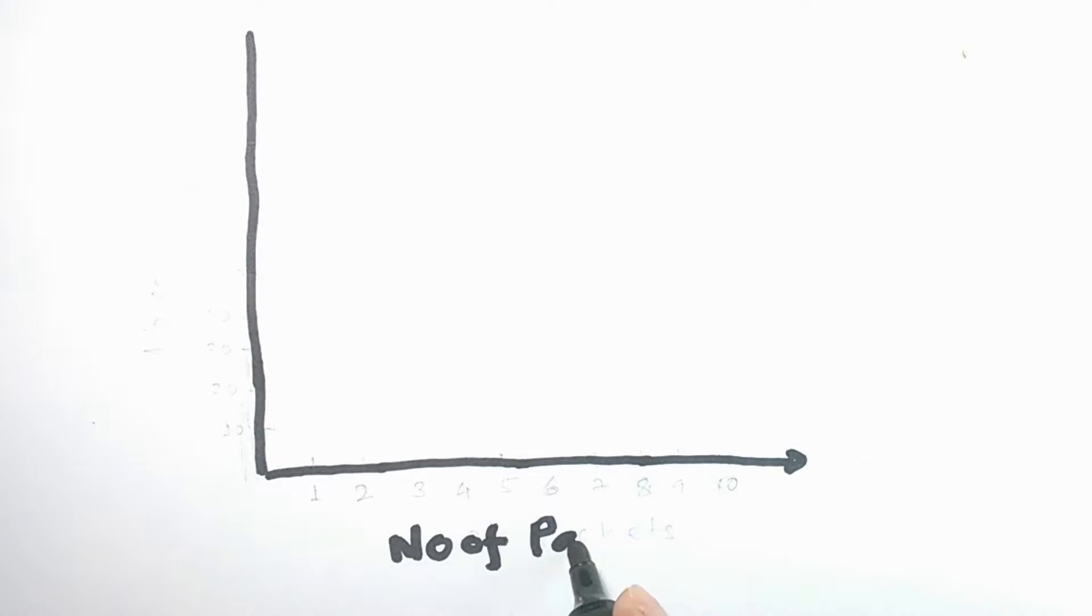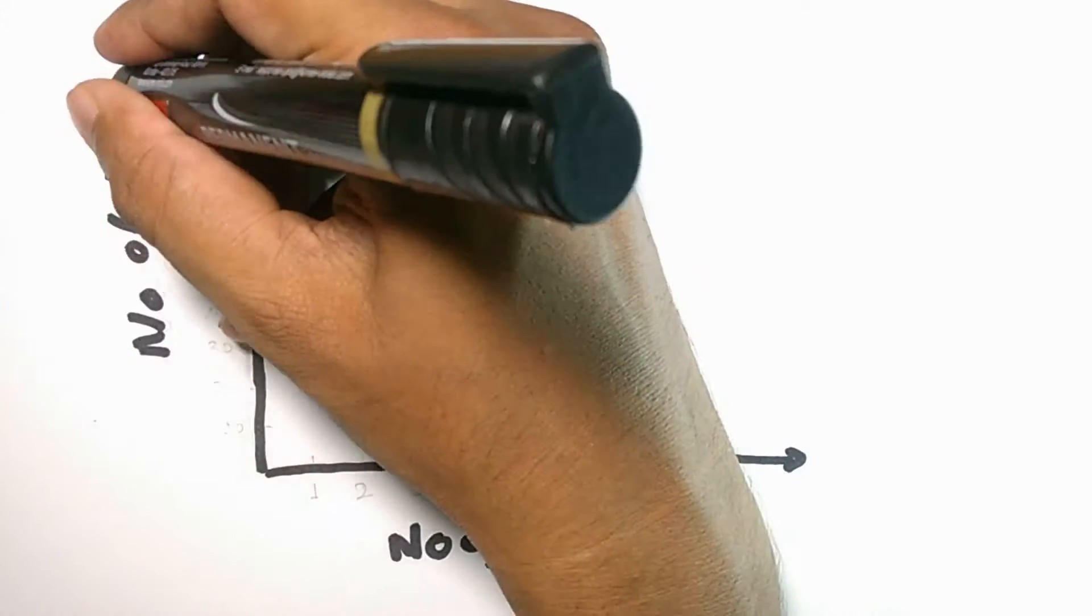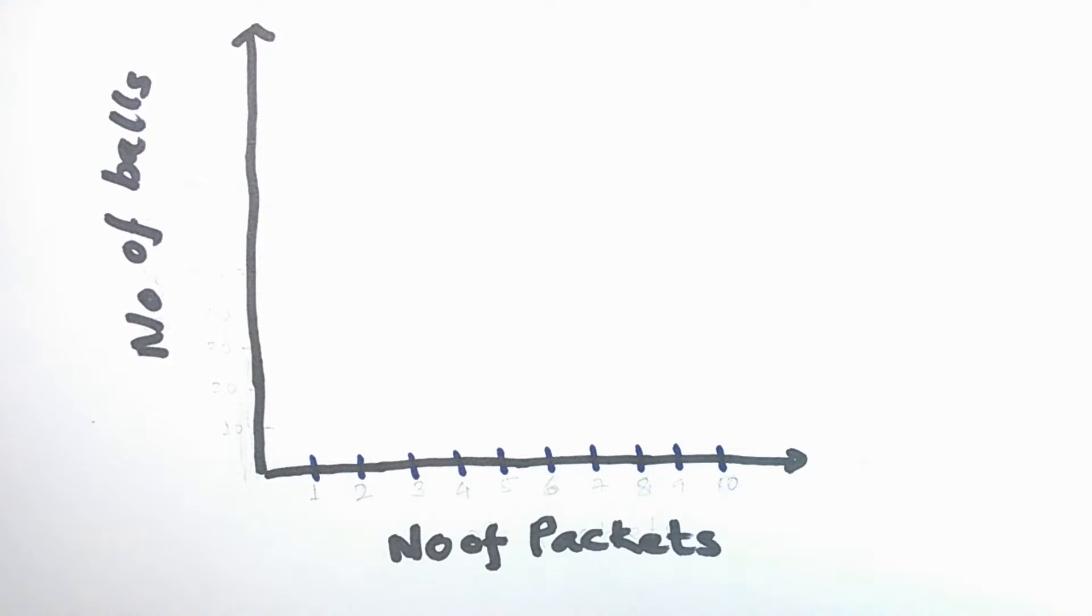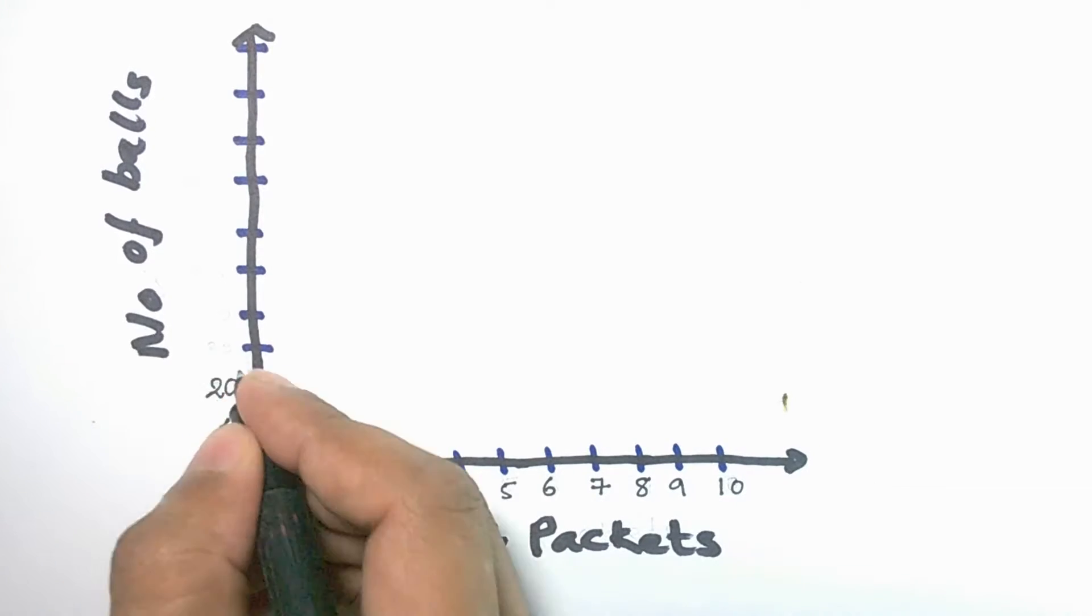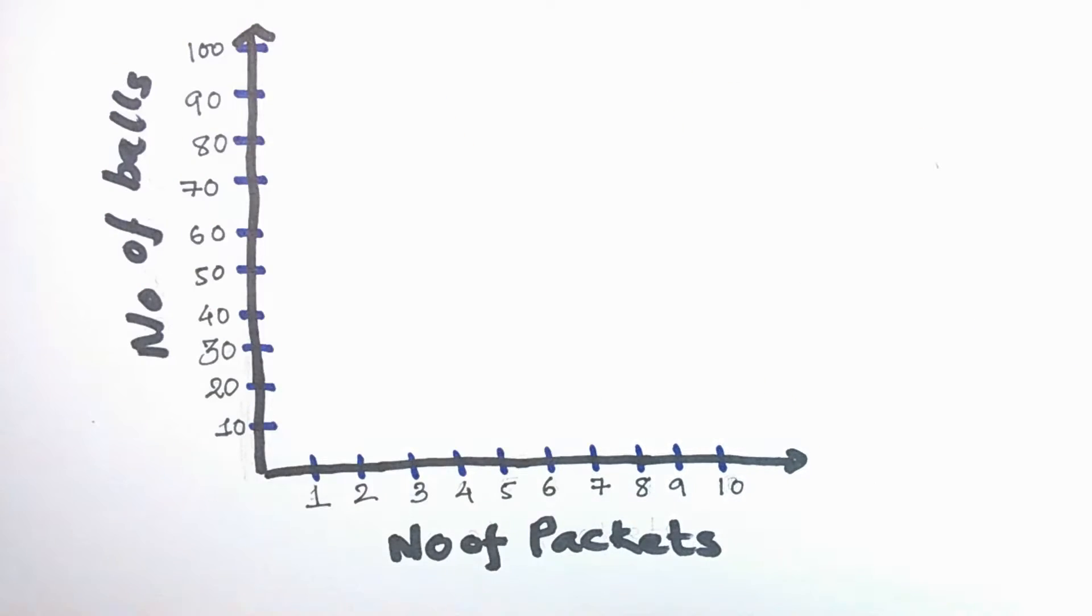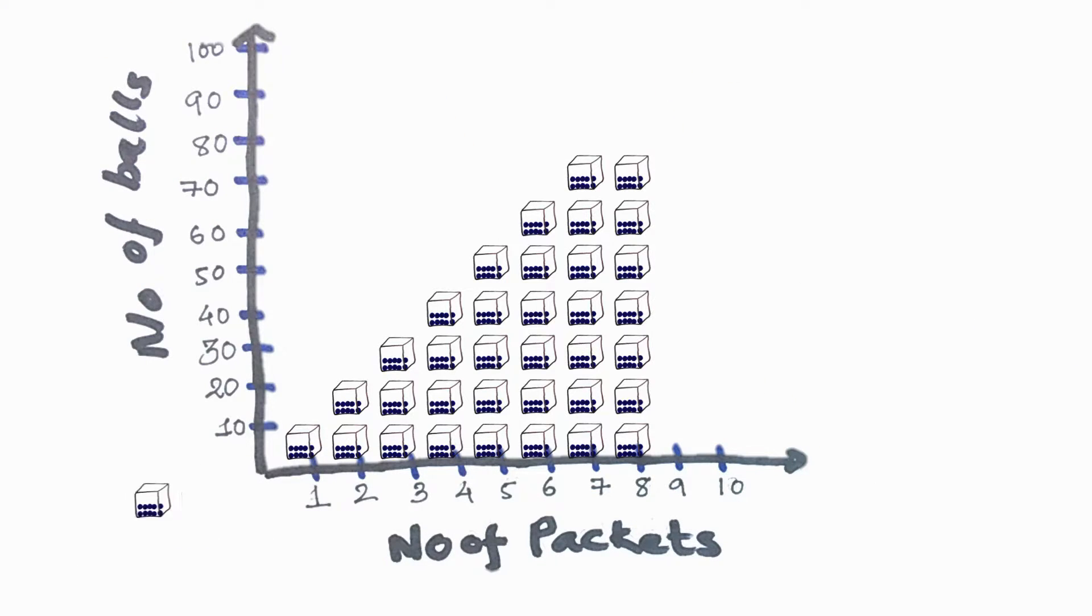This situation can be drawn in a two-dimensional plot, where the x-axis of the plot will represent the number of packets received and the y-axis of the same plot will represent the number of balls the shopkeeper is handling.